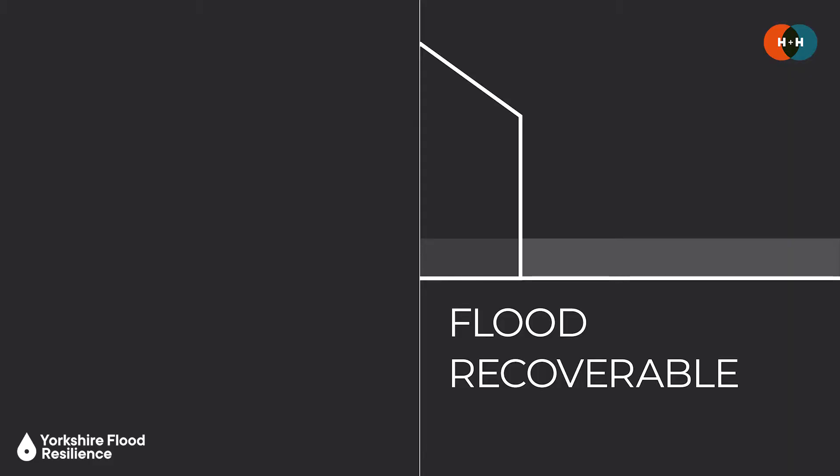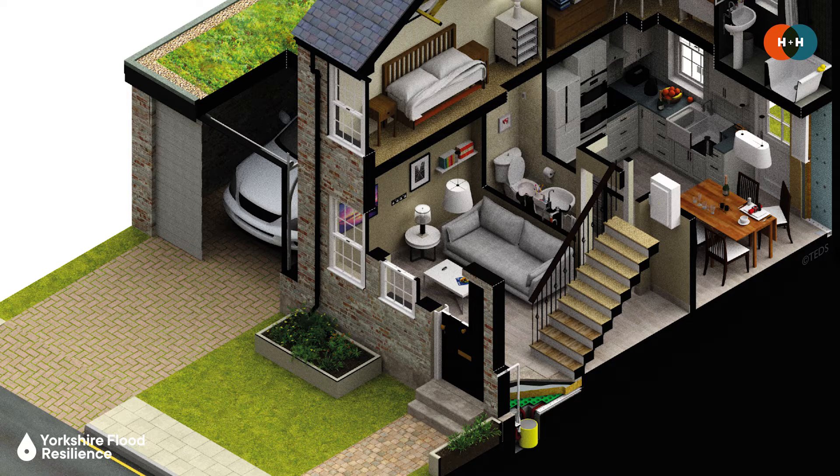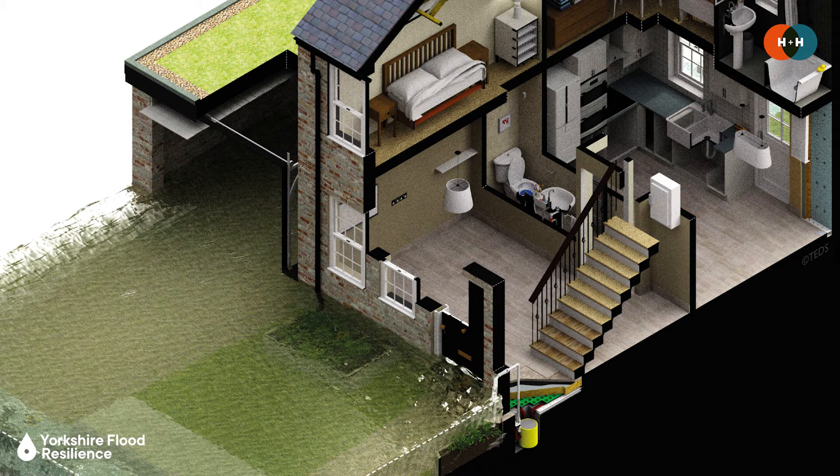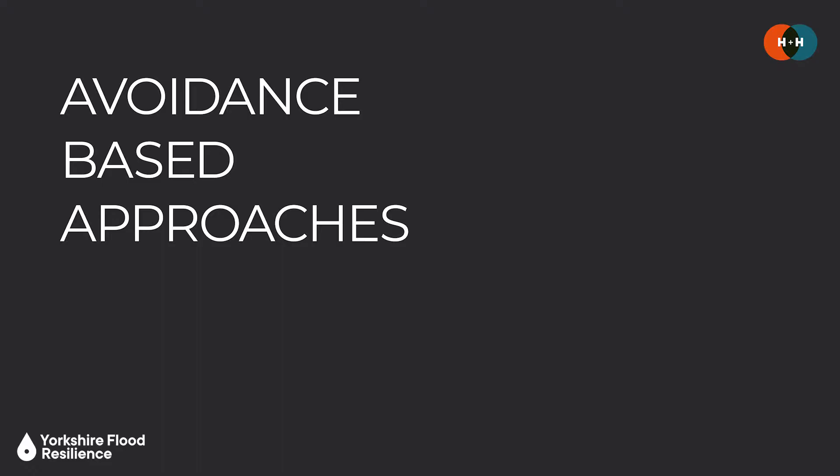In this episode we're going to be looking at flood recoverable approaches, but we have also made an episode on flood resistance measures, the aim of which is to help restrict water entry into a building — for example things like flood doors. We're also making an episode on avoidance-based approaches for PFR, including things like raising floor levels, changing the location of habitable areas or even adjusting the vertical or horizontal position of the building itself.